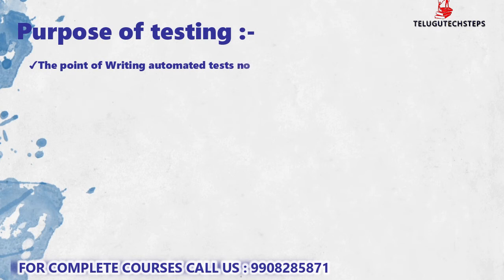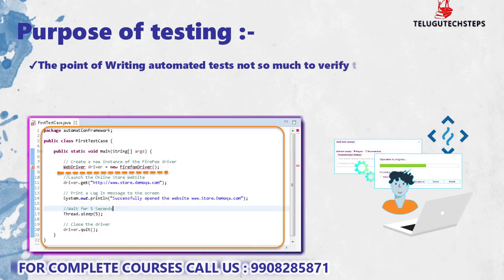The main target and main focus of automation testing is to verify on an ongoing basis — to catch mistakes or problems in the future that we need to identify at the right time. That is the core purpose of automation testing.